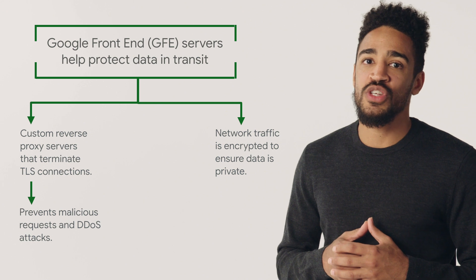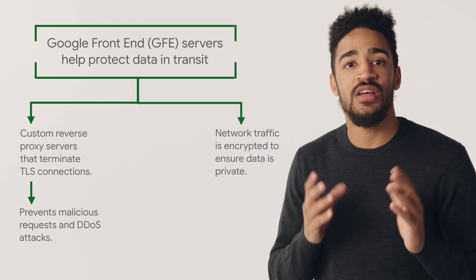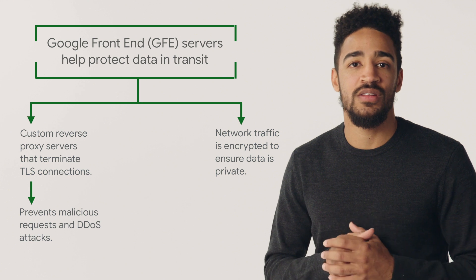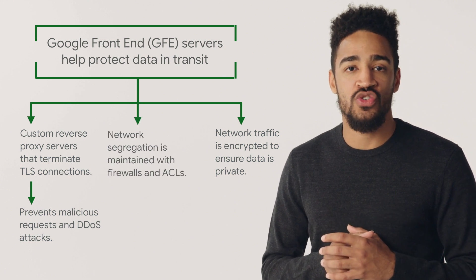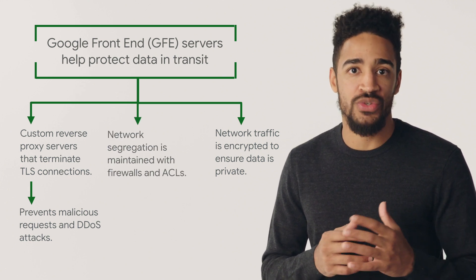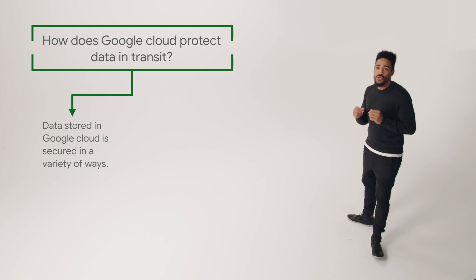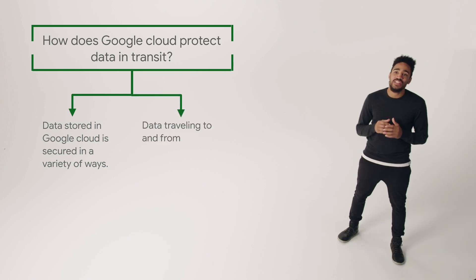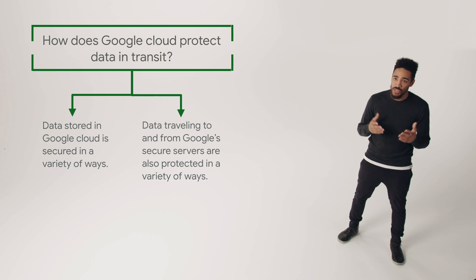Encrypted inter-service communication can remain secure even if the network is tapped or a network device is compromised. On top of that, Google uses industry-standard firewalls and access control lists, or ACLs, to ensure network segregation, adding another layer of protection to sensitive networks. Lastly, since Google's using the same infrastructure it provides to its users, the same DDoS and man-in-the-middle protections we talked about previously apply here.